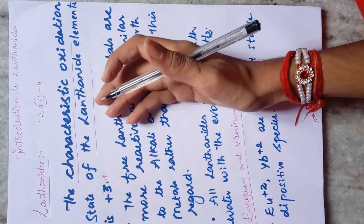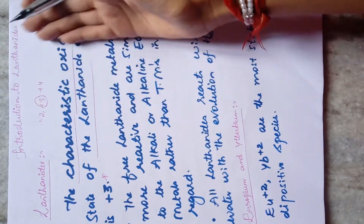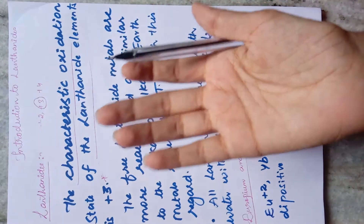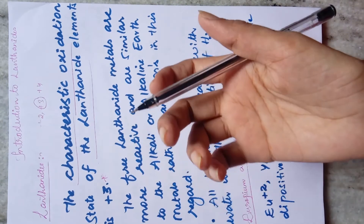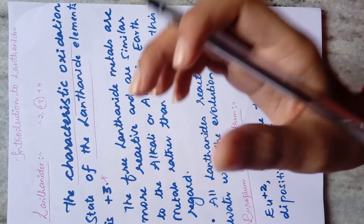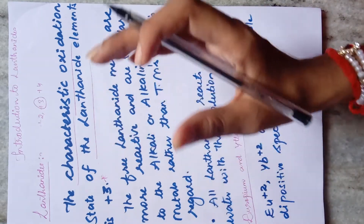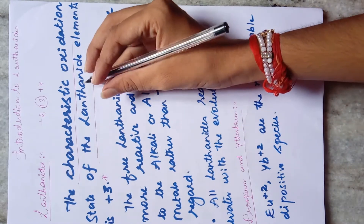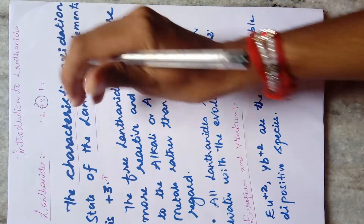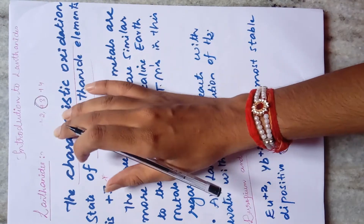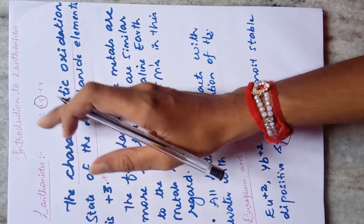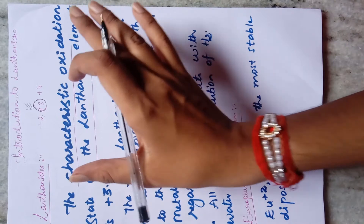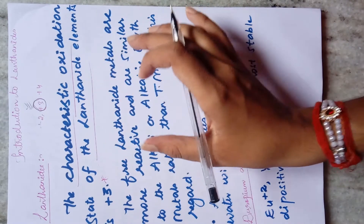This video is an introduction to the lanthanides, covering the basics of what we have learned. The characteristic oxidation state of lanthanide elements is +3. All lanthanides can exhibit +2, +3, and +4 oxidation states, but +3 is the characteristic one. This is an important point that has appeared in CSIR once.